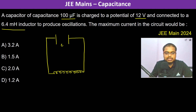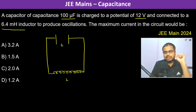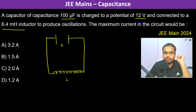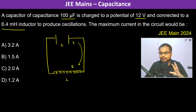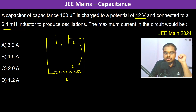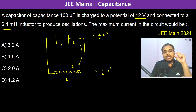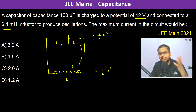In an LC oscillation, the energy stored keeps oscillating between both components. The energy stored in the capacitor is half CV squared, and the energy stored in the inductor is half LI squared. At some times there is partial energy stored amongst both of them.